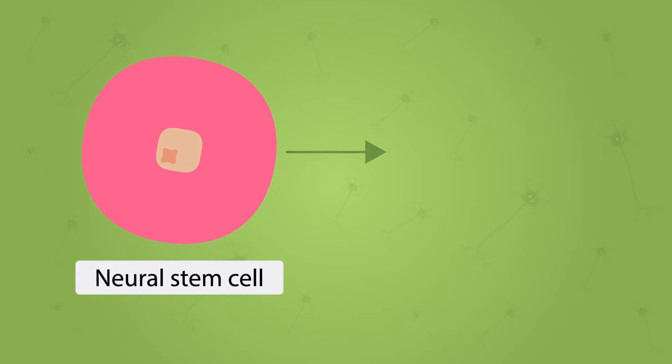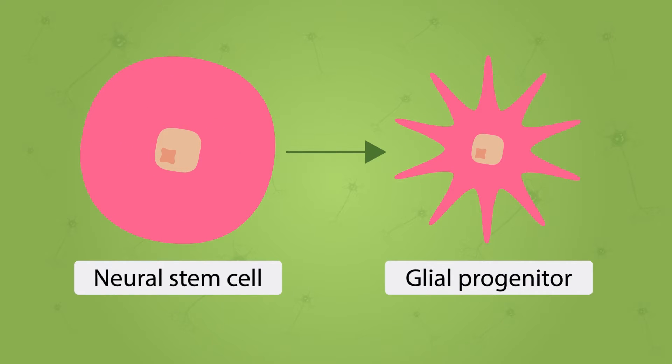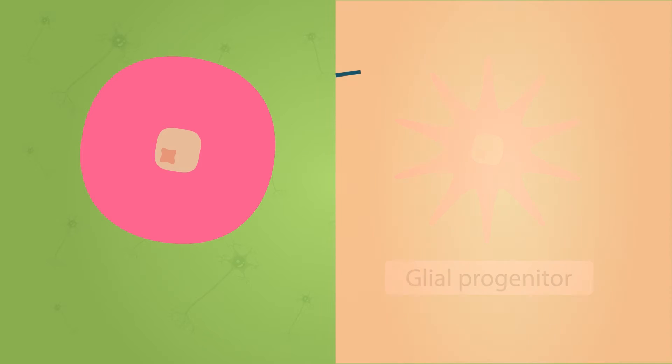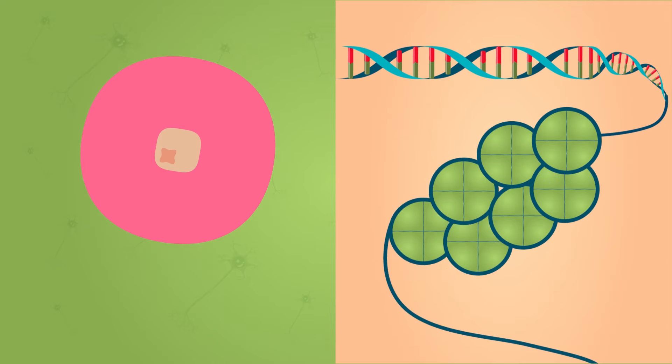For example, the progressive lineage restriction of neural stem cells during the neurogenic and then-gliogenic periods of brain development is characterized by the concerted deposition of repressive and activating epigenetic marks in specific genomic regions.